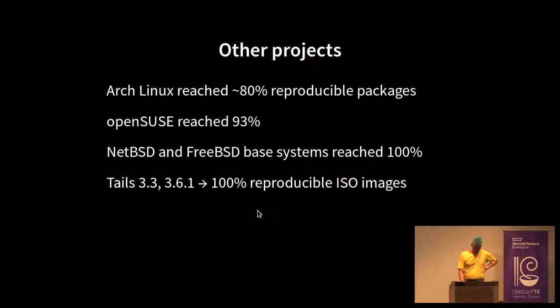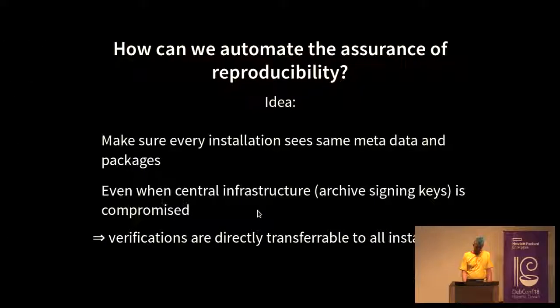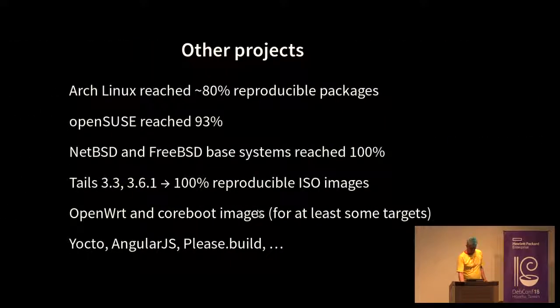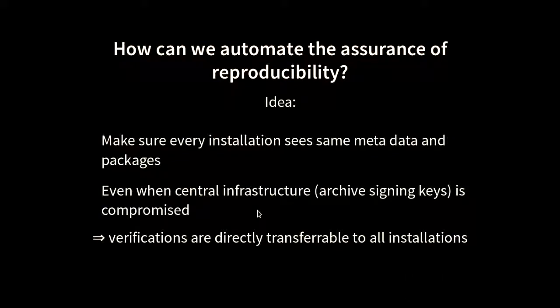Just to give an overview about other projects which do also reproducible builds or working on it. Arch Linux is at 80%, mostly because the way they install Python packages. They put the Python packages in the package while Debian installs them at installation time so that the Python path ends up there. OpenSUSE has reached 93% like Debian. NetBSD and FreeBSD have reached 100% for their base systems, not for the whole ports collection, but the base system can be reproducible. They lack the source code is ready, but the infrastructure not, which is the part Benjamin will explain for the Debian stuff.